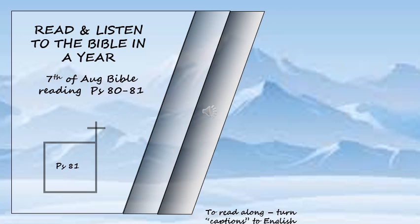Psalm 81. Sing for joy to God our strength, shout aloud to the God of Jacob. Begin the music, strike the tambourine, play the melodious harp and lyre. Sound the ram's horn at the new moon, and when the moon is full, on the day of our feast. This is a decree for Israel, an ordinance of the God of Jacob.